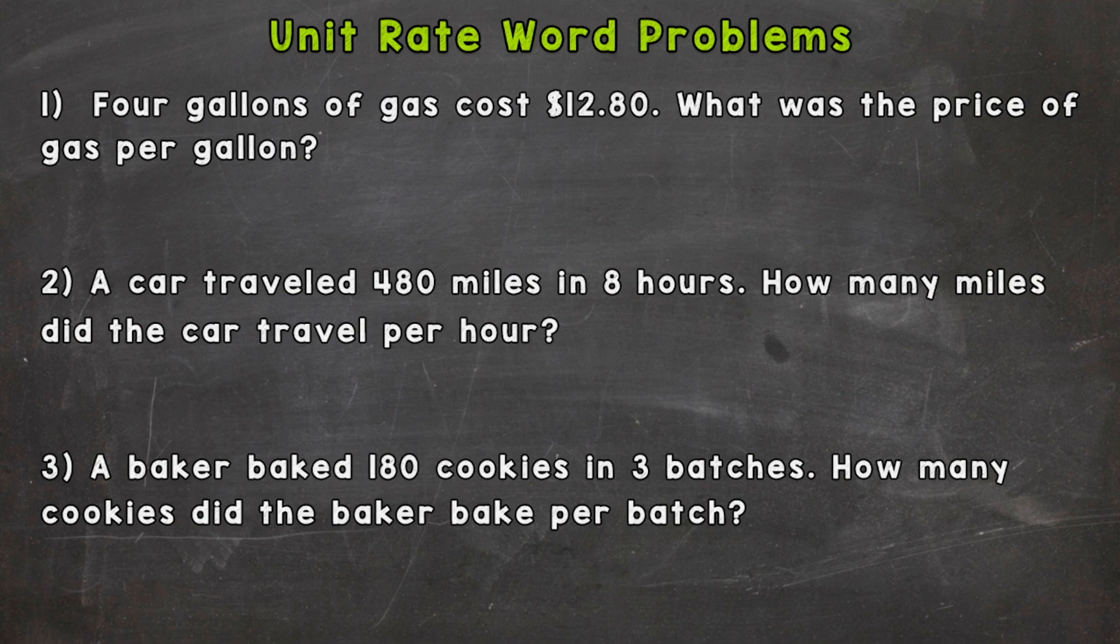So let's jump right into number one here where we have four gallons of gas cost $12.80. What was the price of gas per gallon? So the first thing we need to do is set up a fractional ratio and remember when it comes to ratios order really matters. So take a look at the question part of the problem and see what order is necessary. And it says what was the price of gas per gallon?